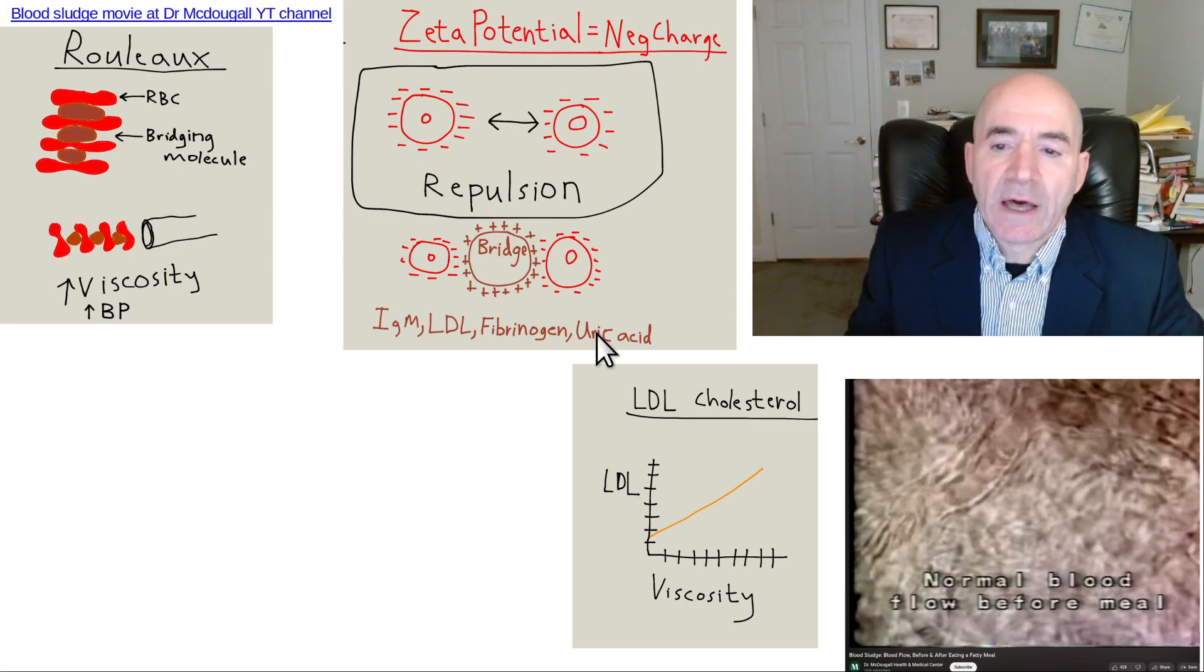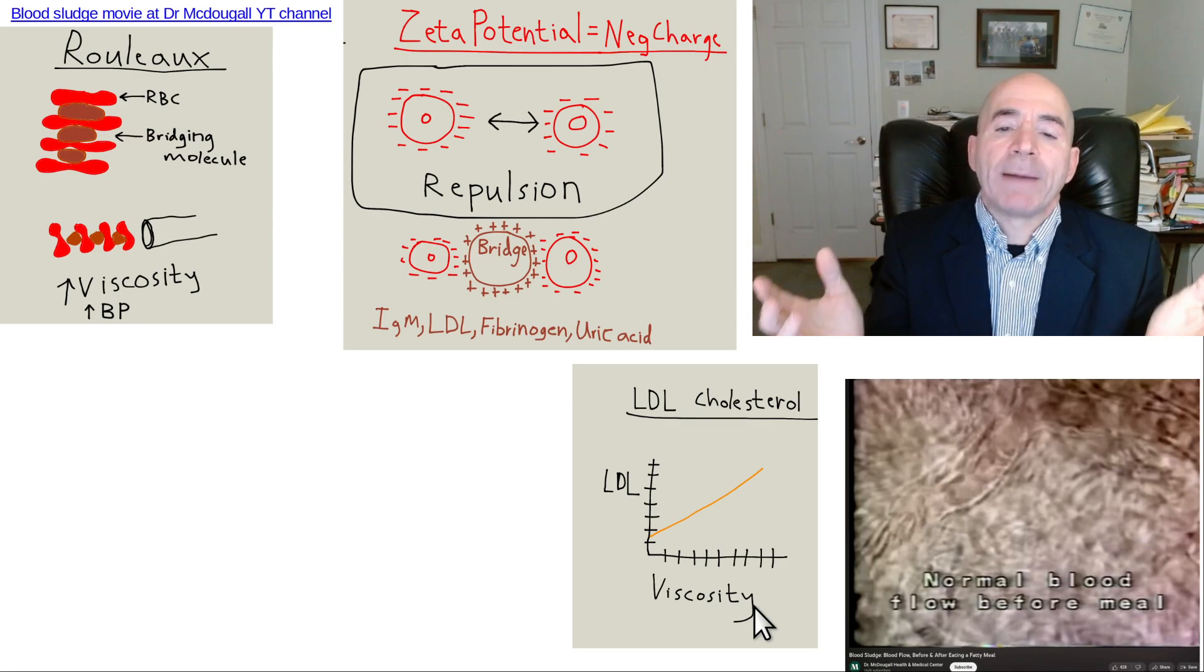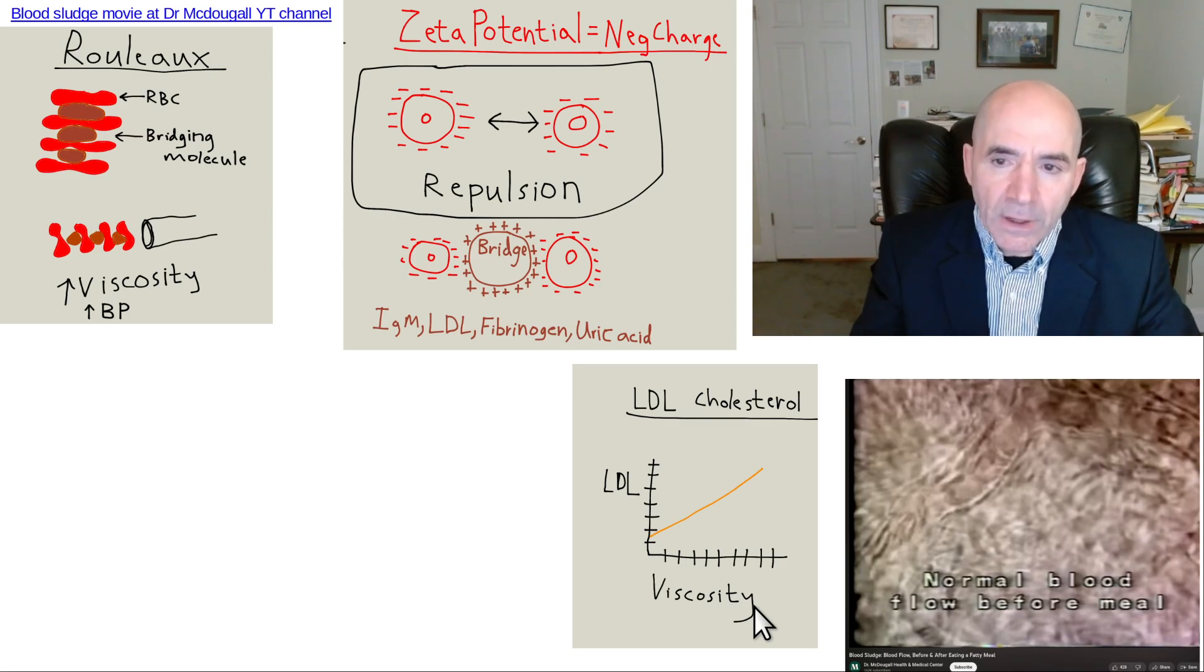Also increased from eating a lot of high-fructose corn syrup type stuff. The higher the LDL cholesterol, the higher the blood viscosity, meaning the thicker the blood. So what it comes down to is when you eat a lot of fat, you're pumping thicker blood, like a milkshake instead of pumping water.